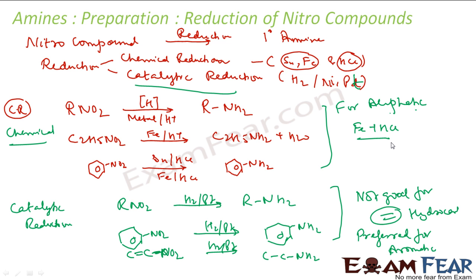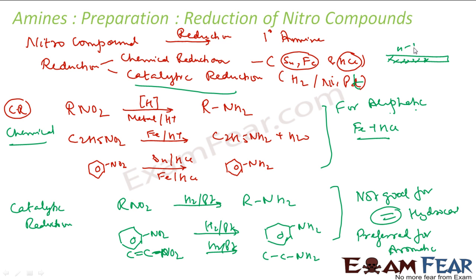There are two kinds of reduction. You can either reduce using chemical ways — that is, you use a metal and acid — or you can use a catalytic way where you have hydrogen gas and a metal surface. Hydrogen gas breaks into H⁺ and H⁻ and attacks the hydrocarbon. If you have doubts, you can watch my previous videos where we explain with pictures how this metal reduction takes place.